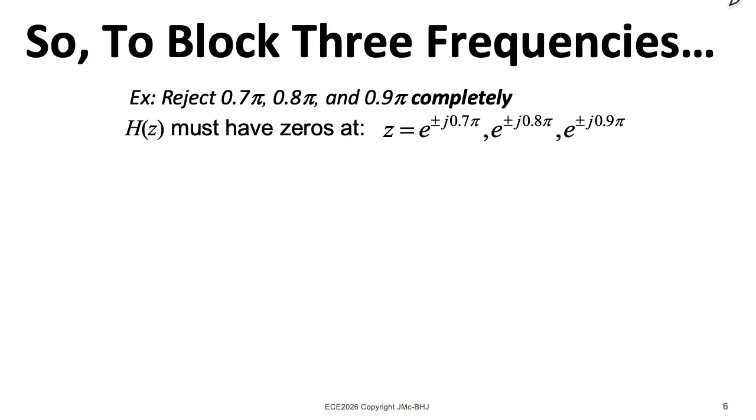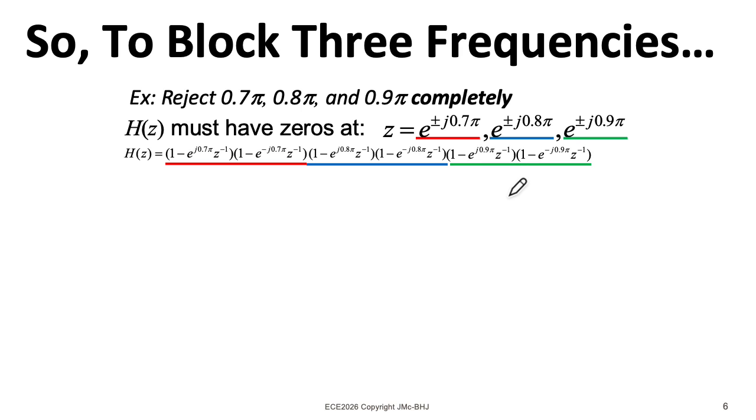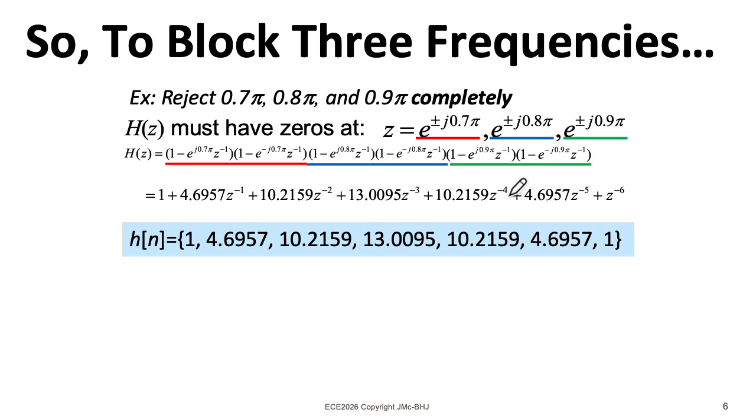So working it out for this particular example, we want to null 0.7π, 0.8π, and 0.9π. And multiplying all of that out, we wind up with an FIR filter with these coefficients.